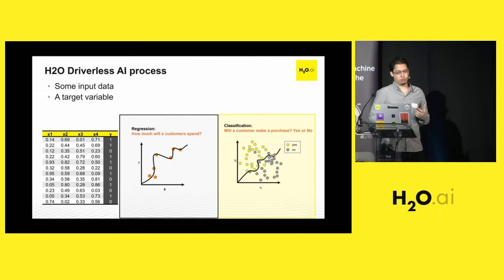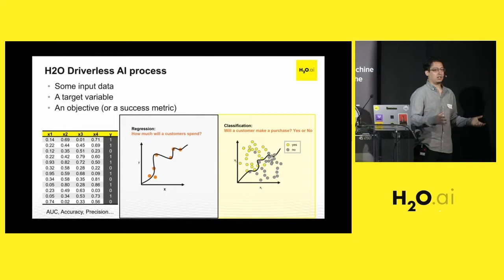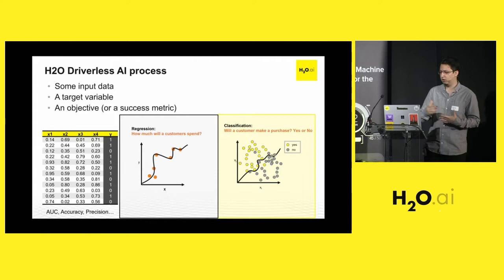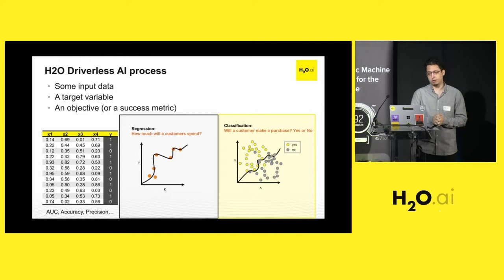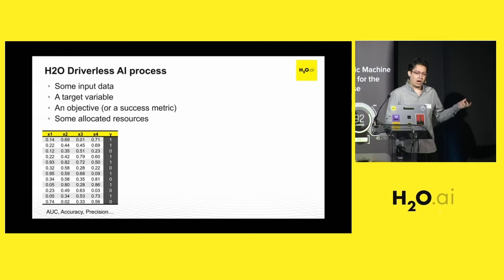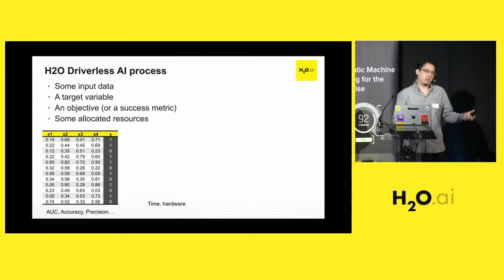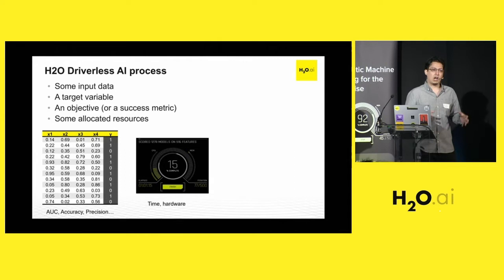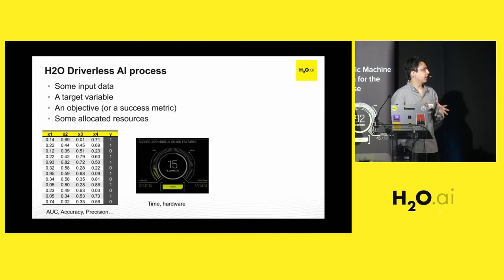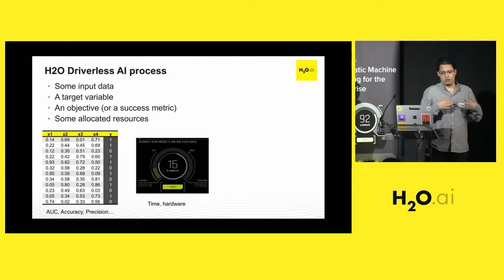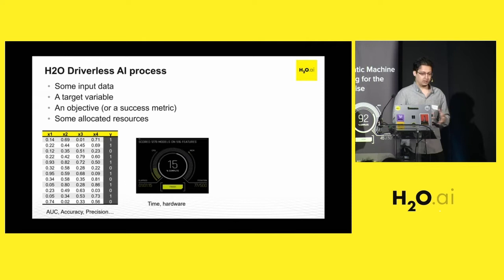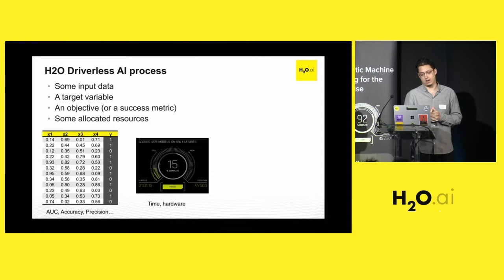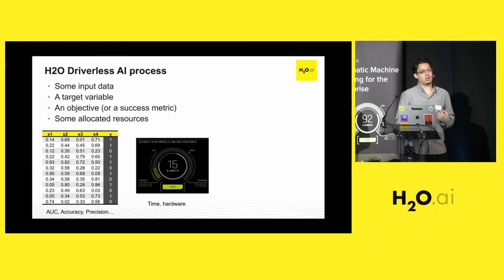The next thing is to define an objective, a measure of success. Do I want to maximize a form of accuracy or minimize a form of error? There are various objectives you can specify to make your model focus in specific areas. Then you allocate some resources. You're bound to the hardware you're running Driverless on, but you also have the ability to control how much intensity the software puts on maximizing accuracy and how much time is spent. You can make accuracy a function of time. If you don't have much time, you can say to Driverless, try to do the best you can quickly. If you have a lot of time, Driverless can get higher accuracy.